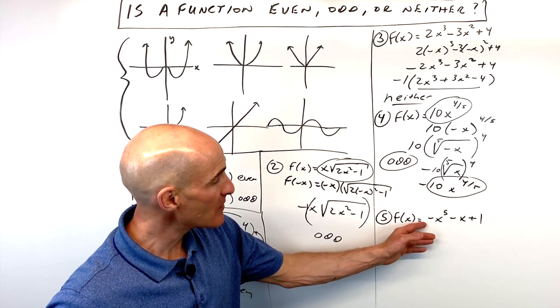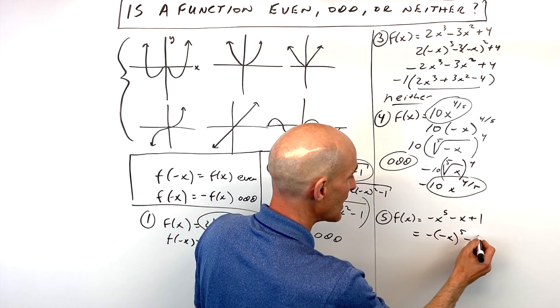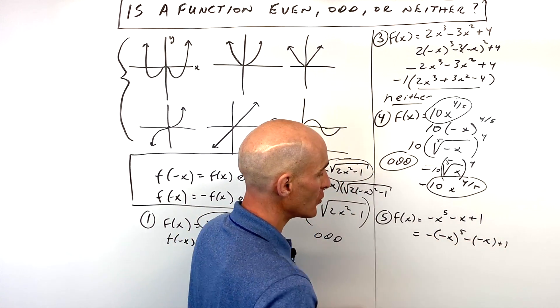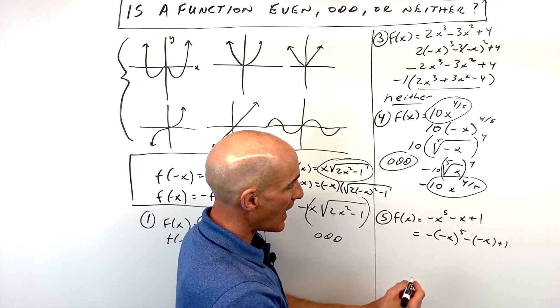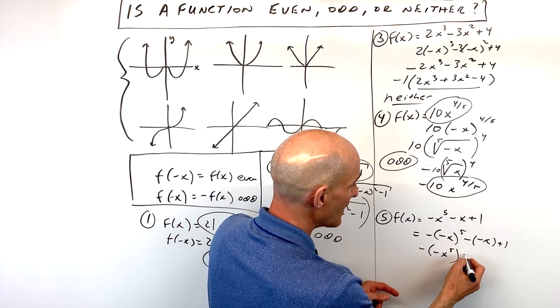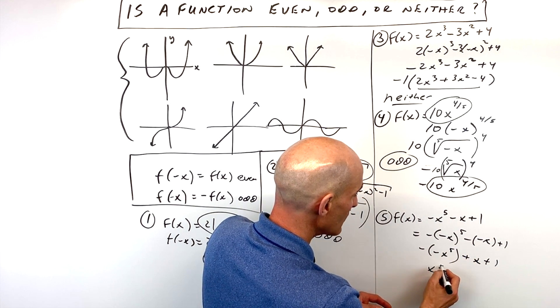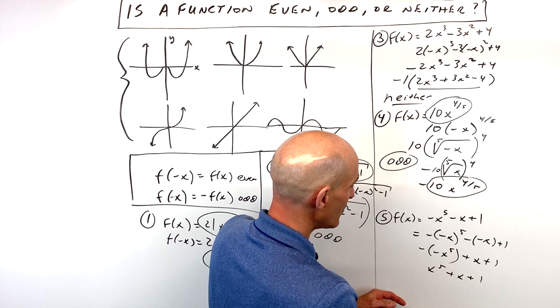And then the last example, number 5, same process. We're replacing x with negative x. Notice how I'm putting it in parentheses to keep everything organized. Negative to an odd power is going to be negative. So this is just going to be like that. Negative times a negative gives you a positive. So if we simplify all this down, we get x to the 5th plus x plus 1.